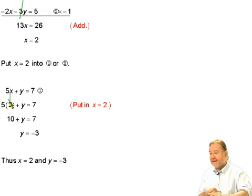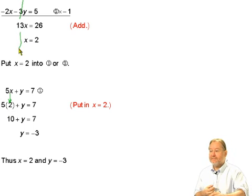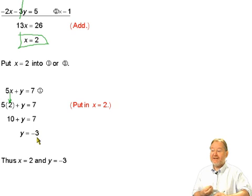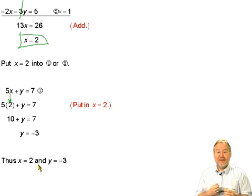What I do then is I take out the x and replace the x with 2 from up here. So 5 times 2 plus y equals 7. 5 times 2 is 10 plus y equals 7. So y equals 7 minus 10, which is minus 3. So the numbers that work to make those two equations balanced are x equals 2 and y equals minus 3.